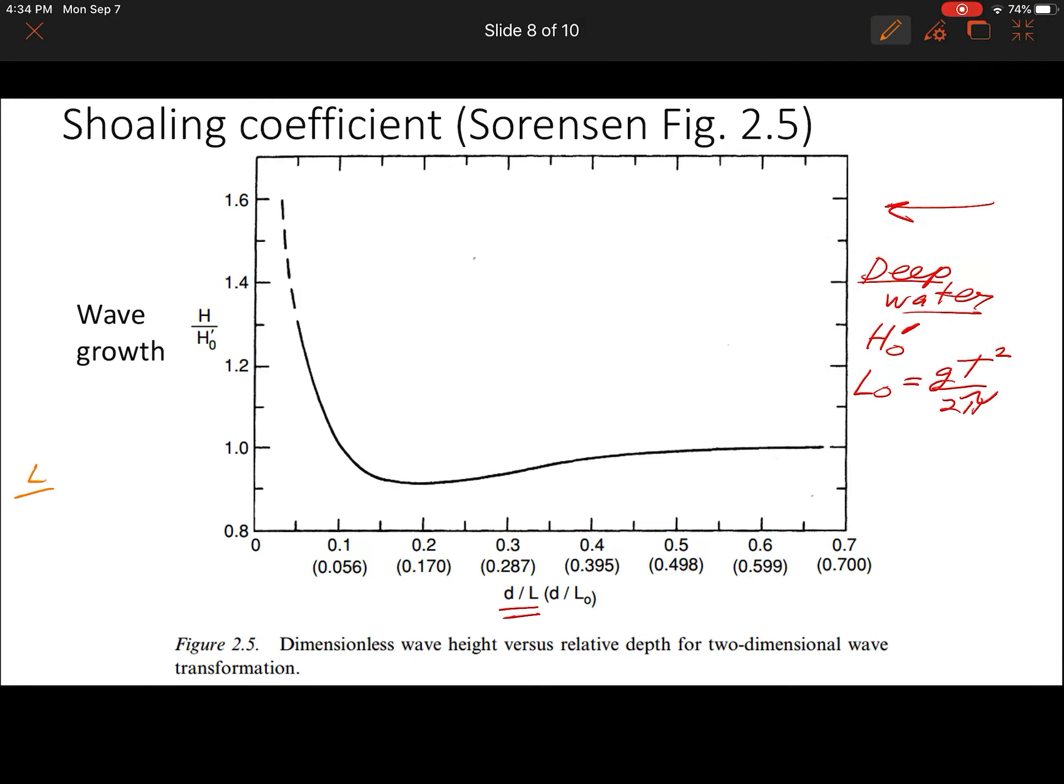We can write in on this diagram where different classifications fall. We know for deep water waves we have a cutoff of L over d needs to be less than 2, or d over L greater than a half. So that is going to be to the right of this line I just drew in.